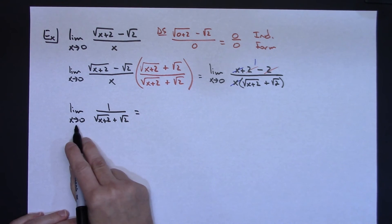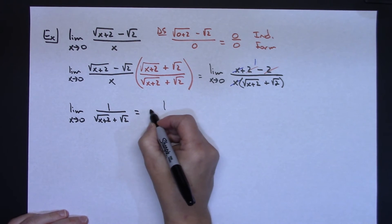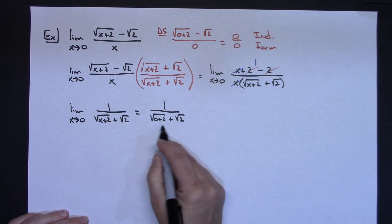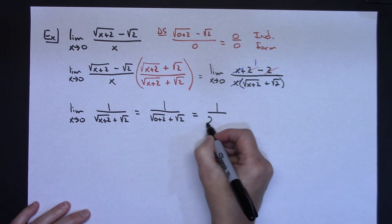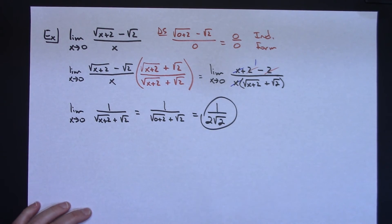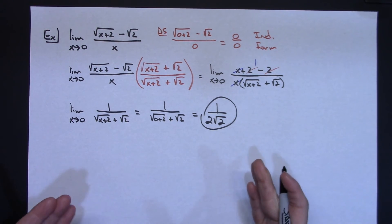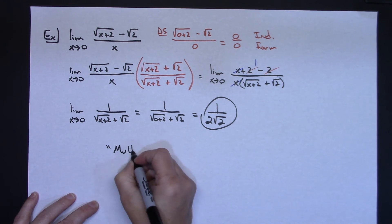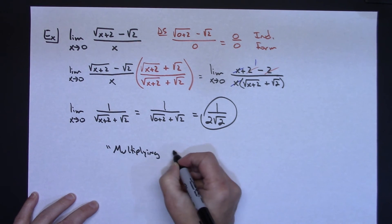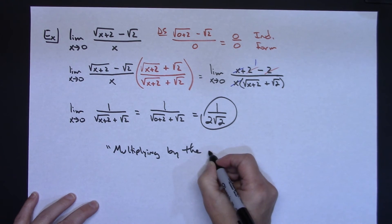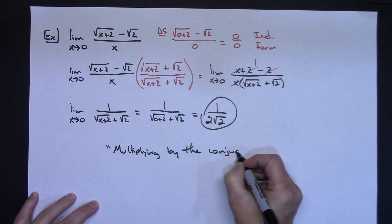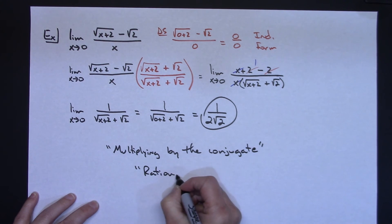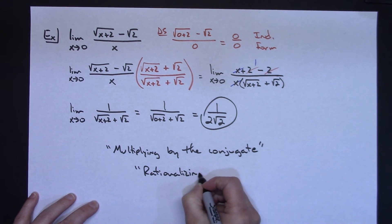Now I'm ready for direct substitution, plugging 0 in for x: 1 over square root of 0 plus 2 plus square root of 2. I can add those radicals on the bottom to get 1 over 2 square root of 2. So another algebraic method that works really nicely is multiplying by the conjugate, which can also be called rationalizing the numerator.